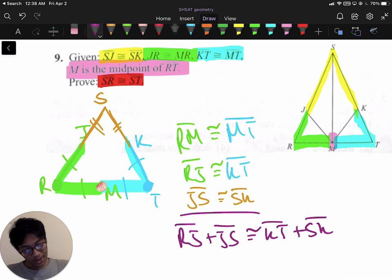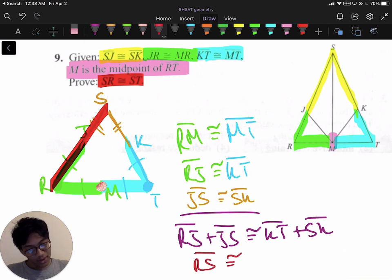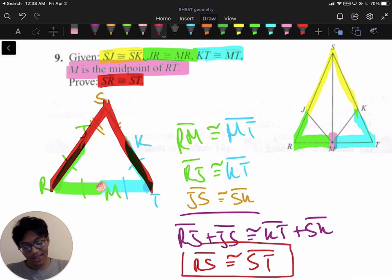So what is RJ plus JS? Well, that's just this side. That's just RS. And that's going to be congruent to KT plus SK. KT plus SK, well that's just this side. That's just ST. And there you go. We're done with our proof. And we've just shown that RS is congruent to ST.